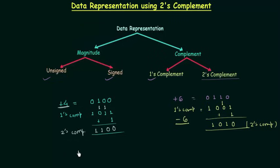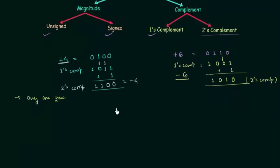As we already know, the negative number is represented by two's complement, so 1, 1, 0, 0 is nothing but minus 4. There is only one zero in two's complement. In the last presentation I told you that in the case of ones complement we have two zeros — positive zero and negative zero. But in two's complement we only have a single zero, which is 0, 0, 0, 0. If you take the two's complement of these 4 bits again you get 0, so there is nothing like a positive zero.